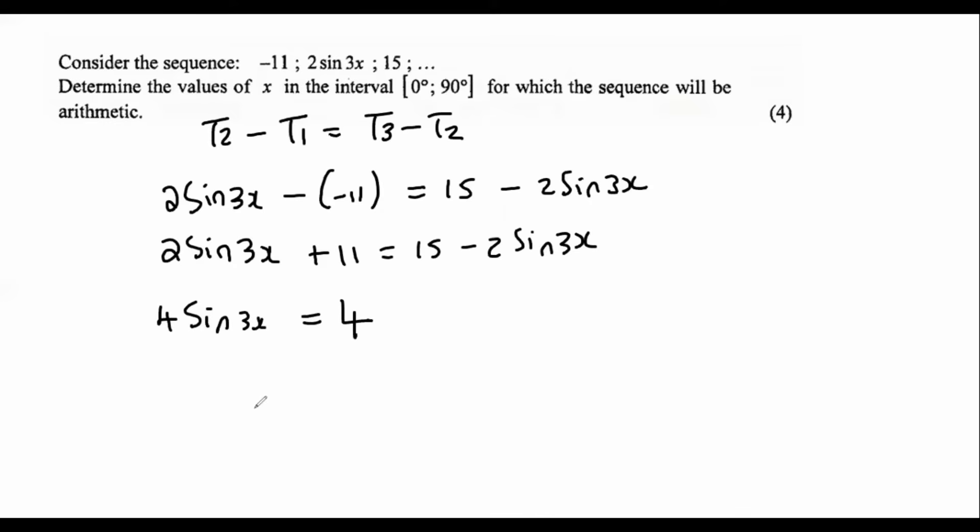Then we can divide by 4, so we end up with sin 3x equals to 1. And now all of a sudden we have entered the area of general solution, specific solution, you know the one where you have to get your reference angles and all of that stuff. Well, that is what we now have to do.